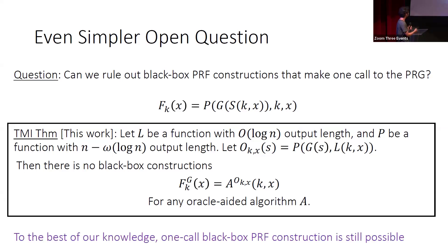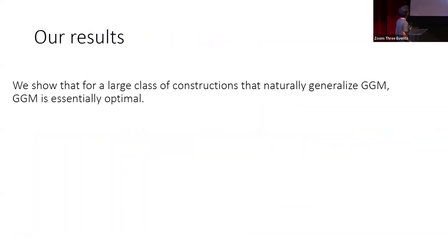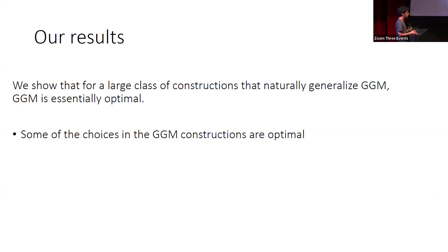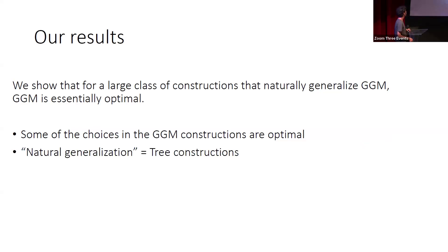We do prove something in this work. The main result is that for a large class of constructions — a natural generalization of GGM called tree constructions — GGM is essentially optimal. Some choices made by the GGM construction cannot be improved: if you want to construct a more efficient PRF, you need to think about other structure. You cannot use the same tree structure as GGM. This natural generalization covers three-way generalizations of the original construction.